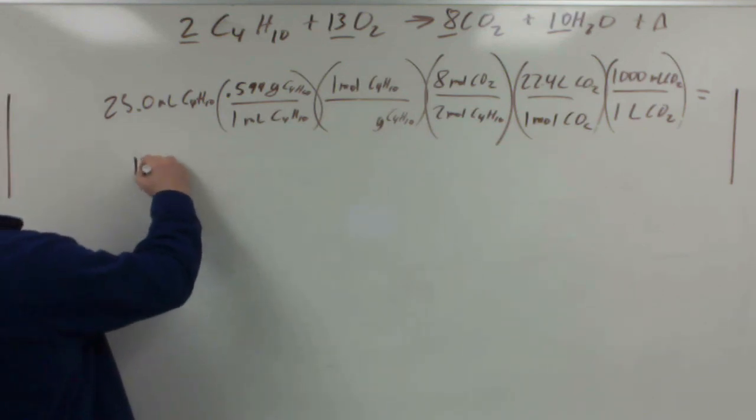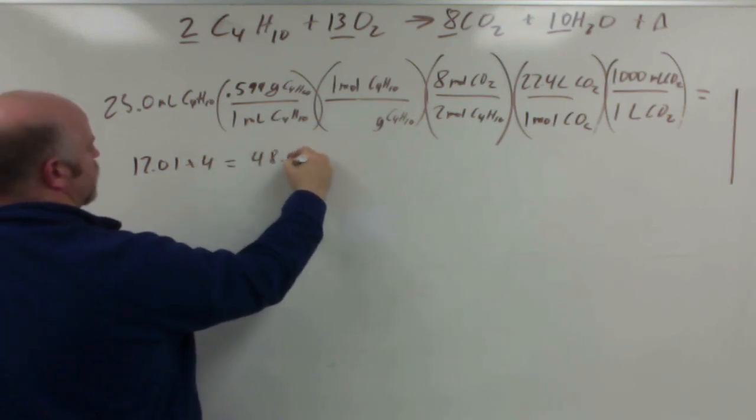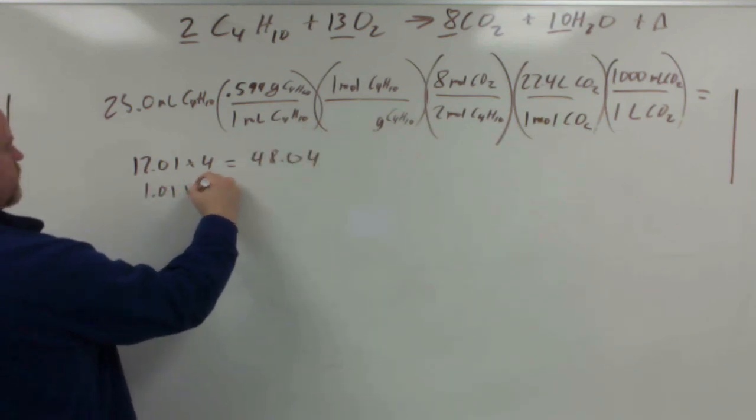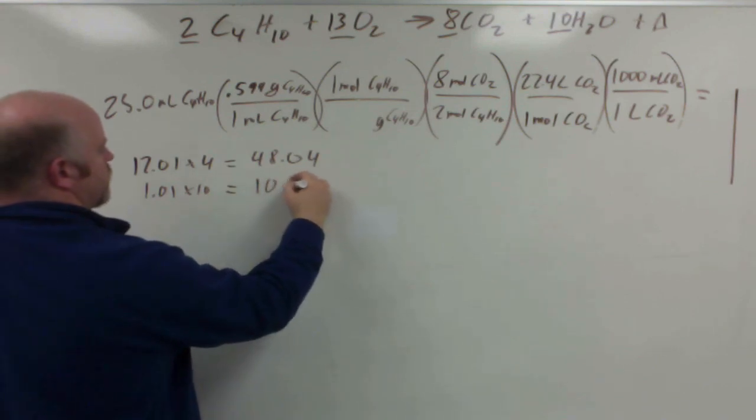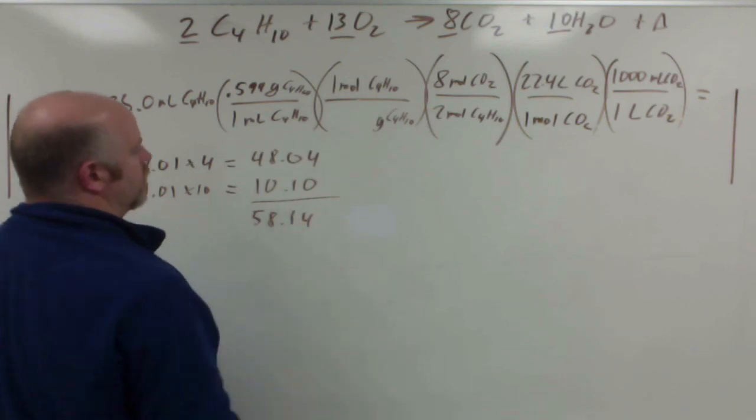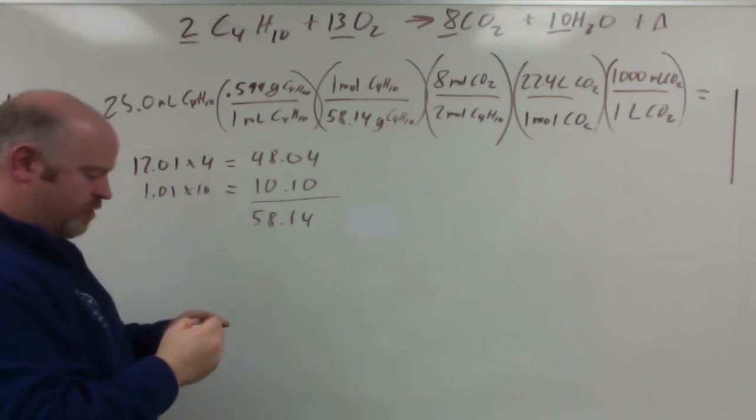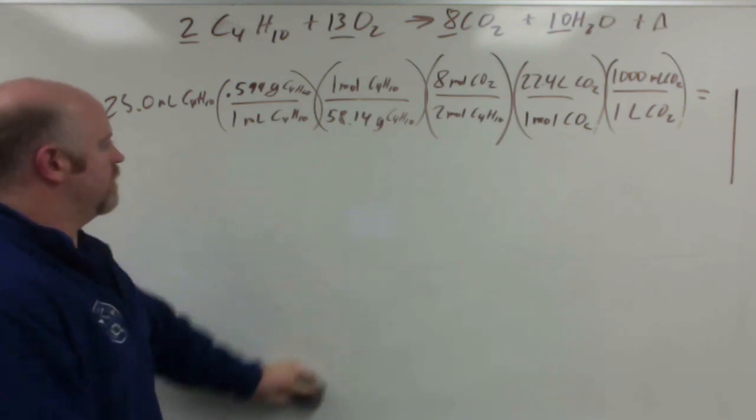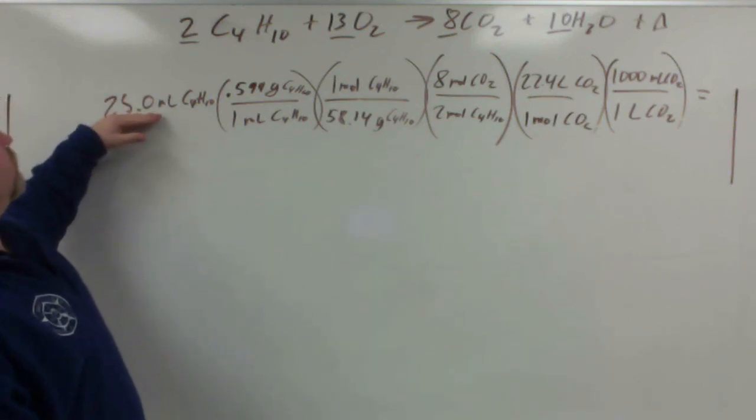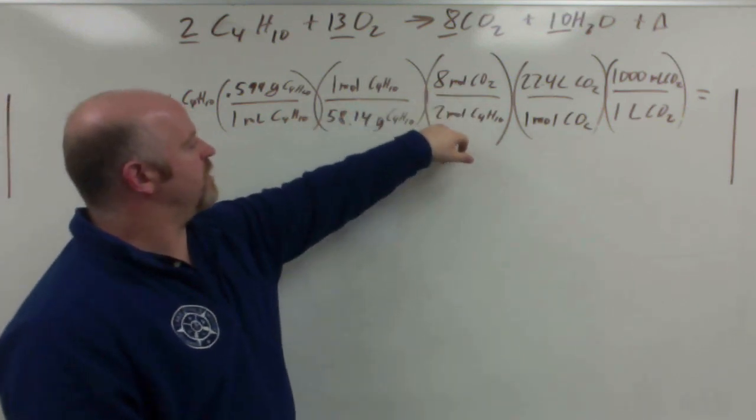So for carbon we have a mass of 12.01 times 4, which gives me 48.04. Hydrogen is 1.01 times 10, so that gives me 10.10, for a mass of 58.14. So add in 58.14 grams there, and now we're ready to solve for this process.